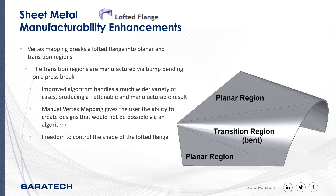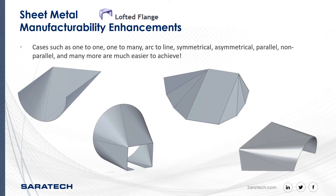The manufacturability enhancements: vertex mapping breaks a lofted flange into planar or transition regions. You can see our transition and planar regions and where it breaks between the two. The transition regions are manufactured via bump bending on a press brake. Improved algorithms handle a much wider variety of cases, producing flattenable and manufacturable results. Manual vertex mapping gives the user the ability to create designs not possible via algorithms and freedom to control the shape of the lofted flange — cases such as one-to-one, one-to-many, arc to line, symmetrical, asymmetrical, parallel, non-parallel, and many more.